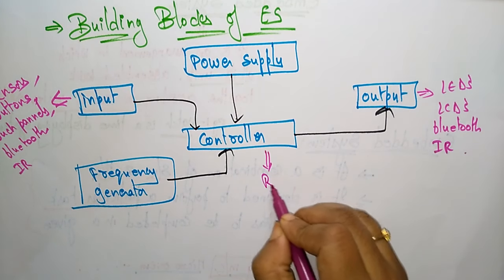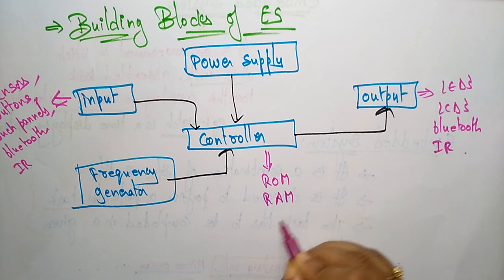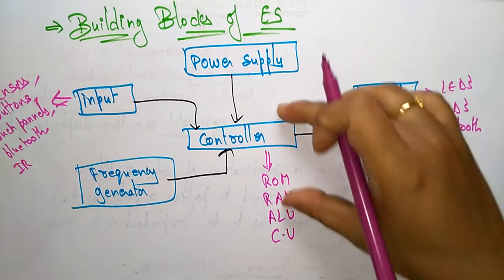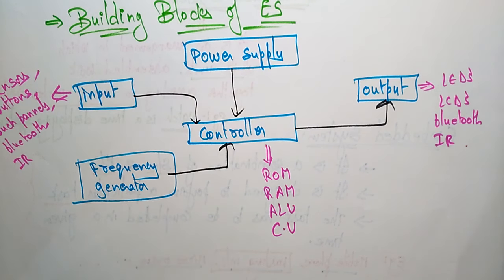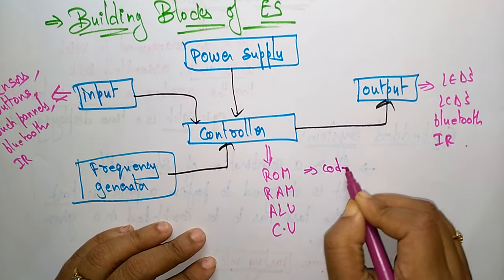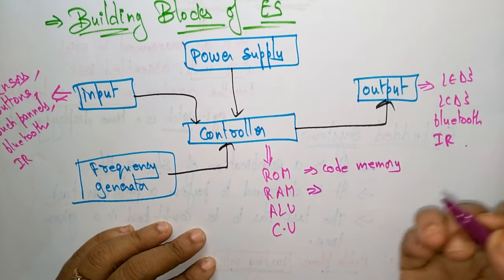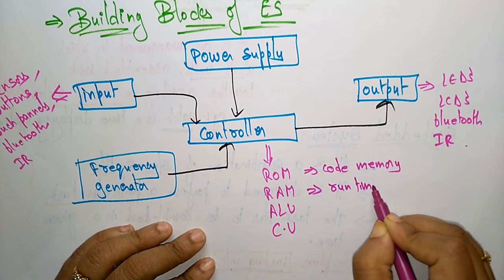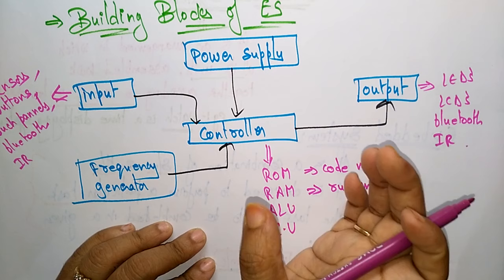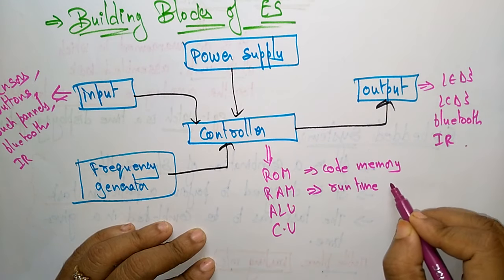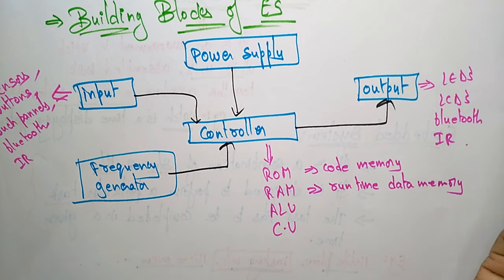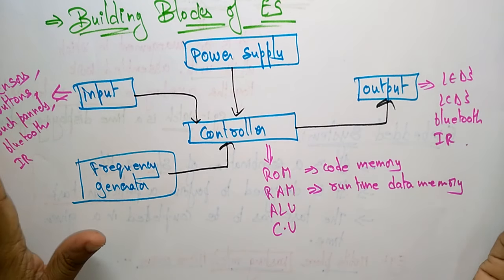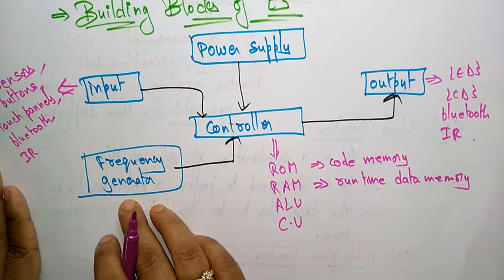The different controller components used in an embedded system are: ROM (Read-Only Memory), RAM, ALU (Arithmetic Logic Unit), and the Control Unit. ROM is where the code is permanently stored — that's why we call it code memory. RAM is runtime data memory; the variables the system needs during operation are stored in RAM. The ALU performs all the calculations, and the Control Unit controls all the operations. We also use a crystal oscillator as the frequency generator.